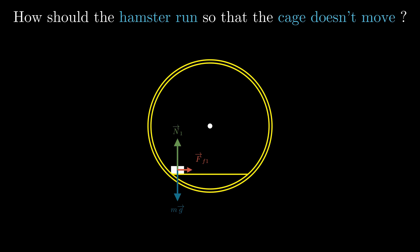So those are the three forces acting on the hamster. Now let's look at the forces acting on the cage. Since the hamster is pushing down on the cage, there will be a normal force from the hamster to the cage downwards, and since the cage does not move, this normal force is equal to the weight of the hamster. Since the hamster pushes backwards to accelerate forward, there will be a backwards frictional force from the hamster to the cage. By Newton's third law, these frictional and normal forces are equal and opposite to the ones the hamster experiences.